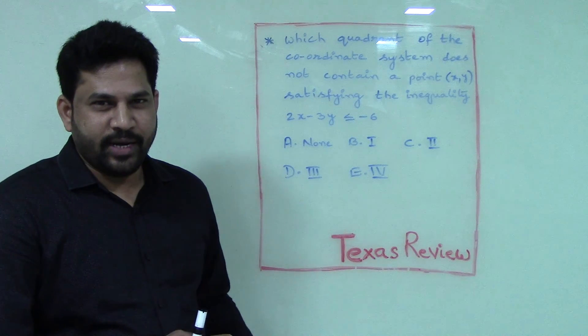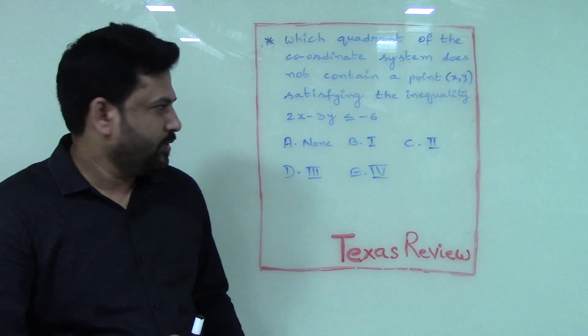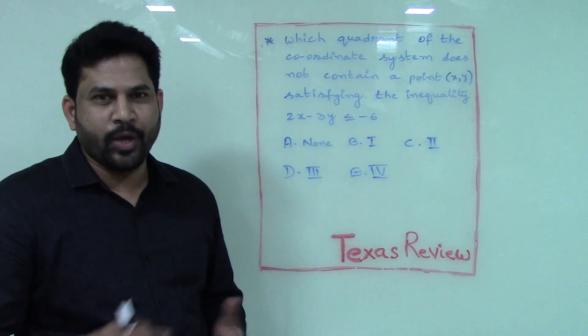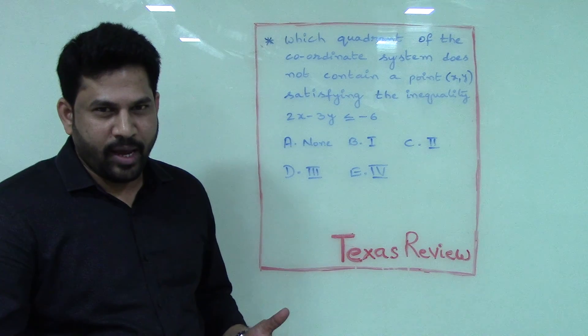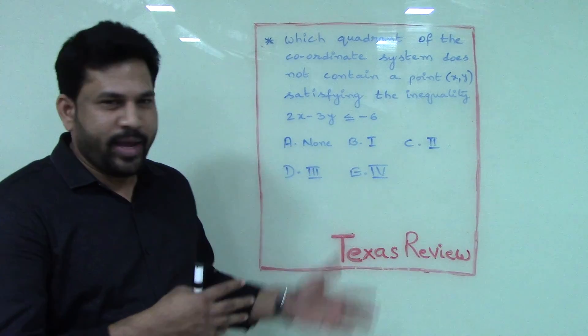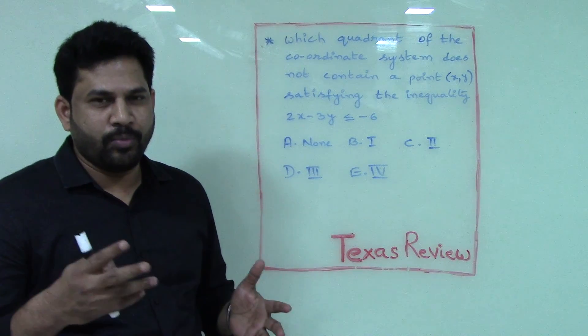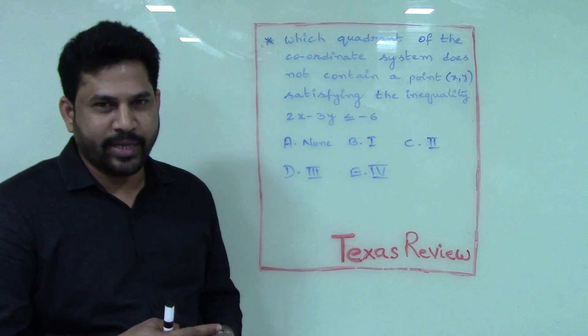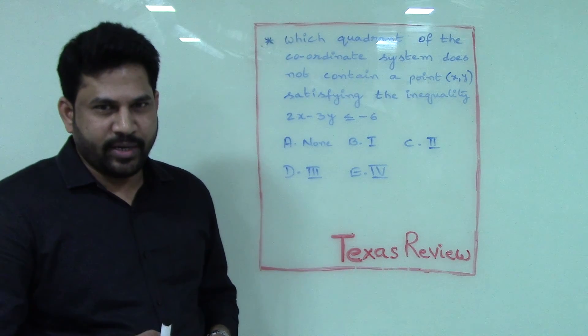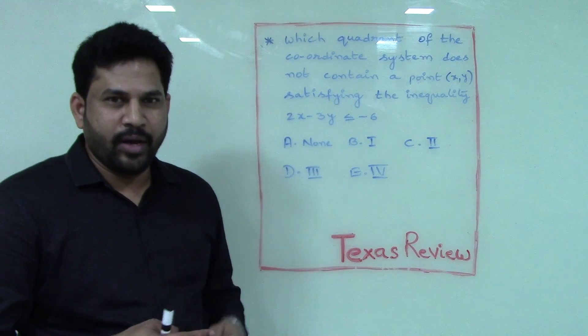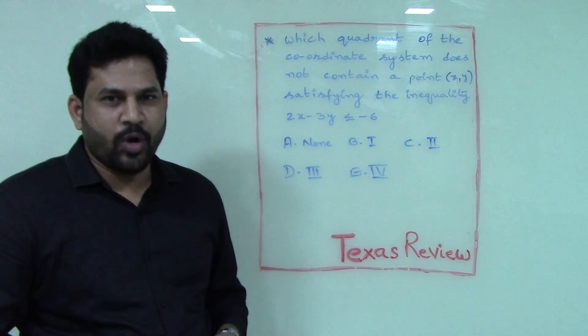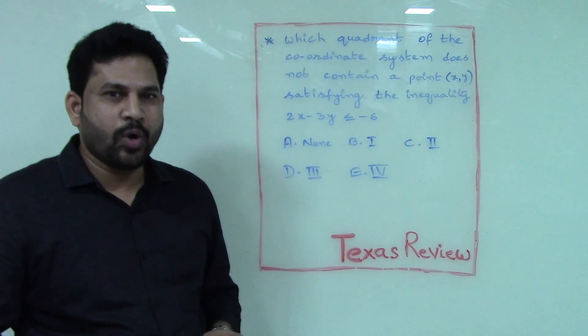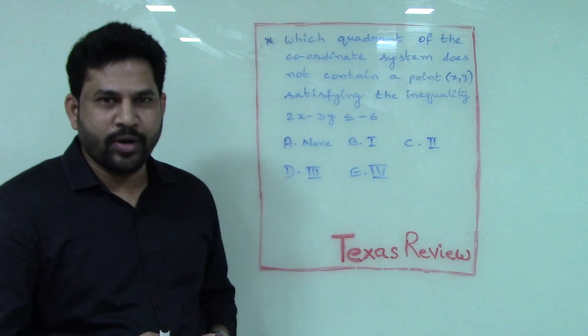Let us understand the coordinate system here. The coordinate system enables us to locate points on a plane. Quadrant 1 has points whose coordinates are positive, both x and y. Second quadrant x is negative and y is positive. Third quadrant, both coordinates are negative. And fourth quadrant, x coordinate is positive and y coordinate is negative.